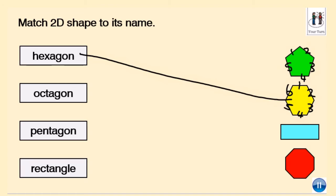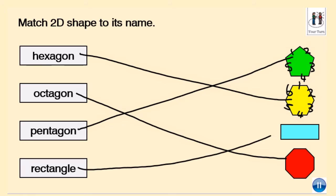Okay, so octagon has eight sides, pentagon has five sides, and a rectangle has four sides.